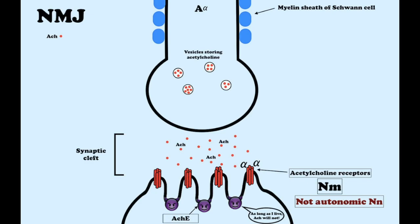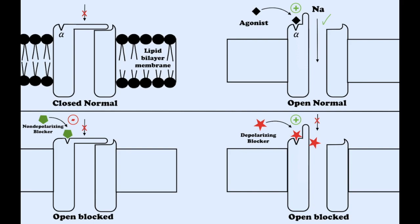Acetylcholine released into the junctional cleft binds reversibly to receptor sites on the alpha subunit of the sodium ionophore. When the alpha site on each of the two subunits is occupied, the channel opens and allows depolarization. Rapid metabolism enables rapid dissociation of receptor and agonist, and the channel closes. Succinylcholine and the released acetylcholine are both agonists of the receptor. When both receptors are occupied by any combination of these molecules, the channel opens. However, the persistence of succinylcholine causes the channel to remain open long after the acetylcholine has been destroyed, maintaining a depolarized refractory end plate.